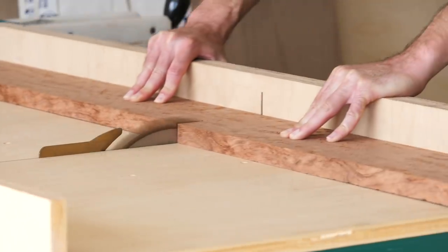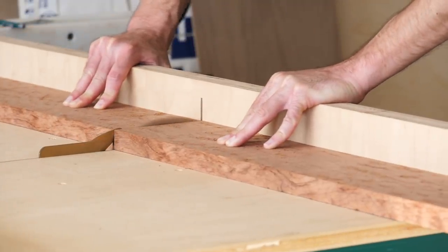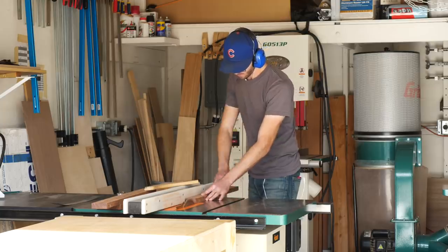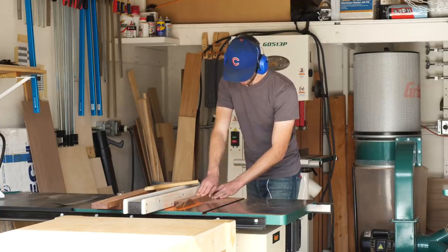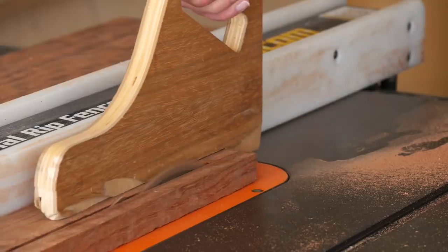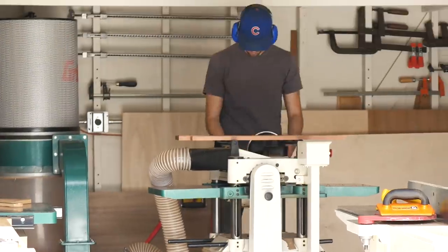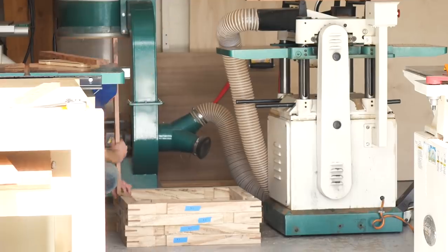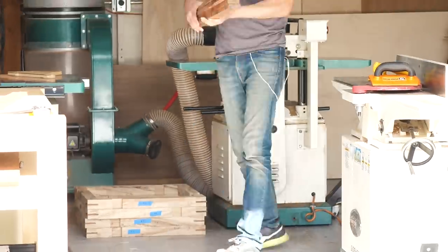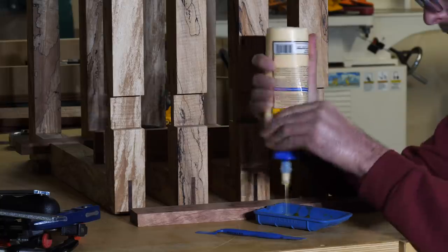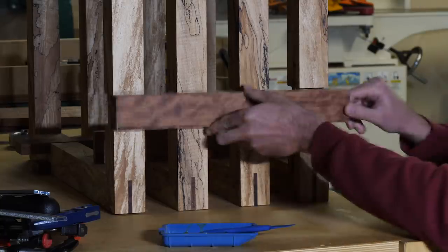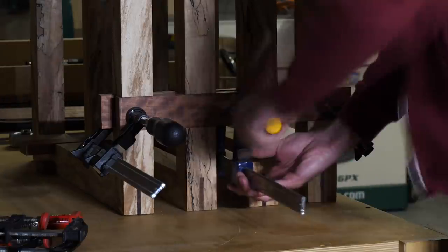Next, I took another chunk of the bubinga and cut it to a width of right around 2 inches, just so that it was narrow enough to fit into the dadoes that I had previously cut. And then I used the planer to slowly thin it out so that it was just slightly proud of the maple once it was glued in. And speaking of gluing it in, that night I was able to glue everything together, and then the next day I came back and cleaned everything up and put on the finishing touches.